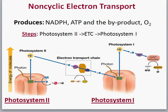The first series of reactions are part of the light dependent reactions — they require light. There are two forms: non-cyclic electron transport and cyclic electron transport. In non-cyclic electron transport, the end products we're trying to create are NADPH and ATP. The byproduct or waste product is oxygen.